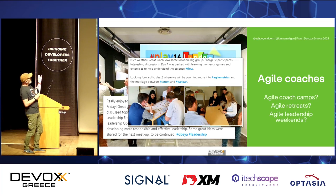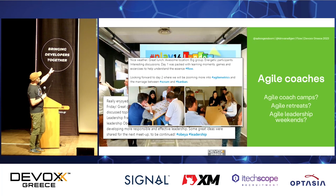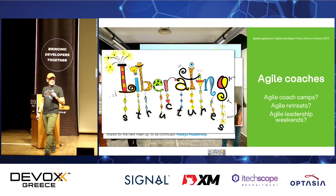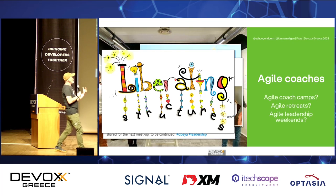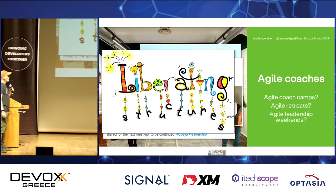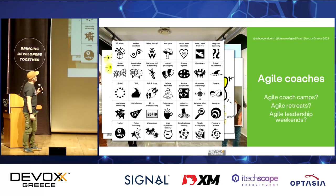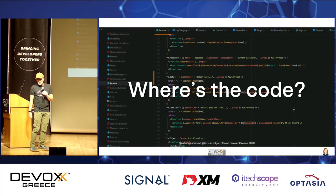From the same meeting: 'day one was packed with learning moments — games and exercises to help us understand the essence of flow.' And then we zoomed in on 'the marriage between Scrum and Kanban.' Then there are liberating structures — basically ways to make meetings more infantilized. We invent all sorts of games to gamify meetings or at least keep people busy. There are all these liberating structures: helping heuristics, conversation café, simple ethnography, user experience fishbowl. And the only thing I can wonder when I see this is: where is my code? I just want to write code.